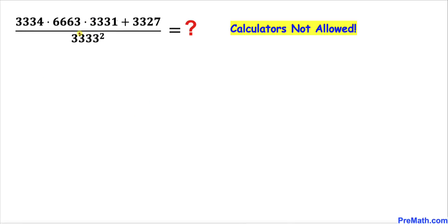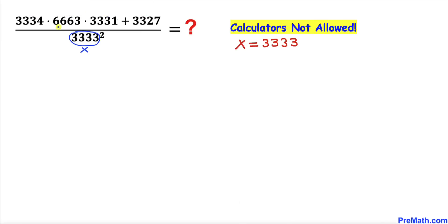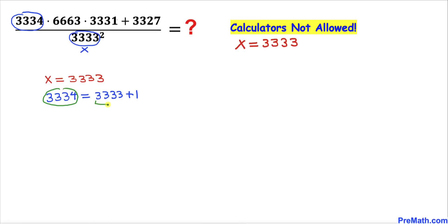Let me start with the number 3333. I'm going to call this number x, so x equals 3333. Now let's focus on 3334 — this can be written as 3333 plus 1, therefore this number becomes x plus 1. So I am going to replace 3334 with x plus 1.